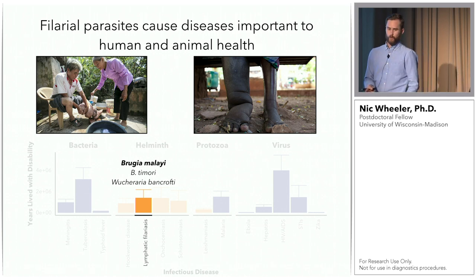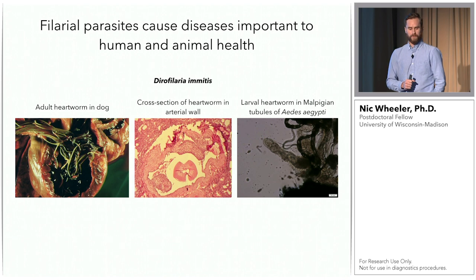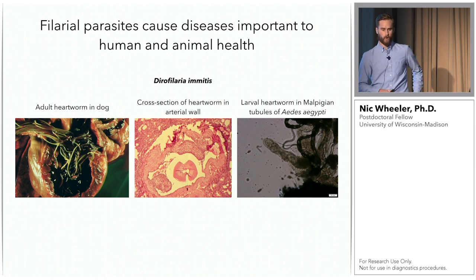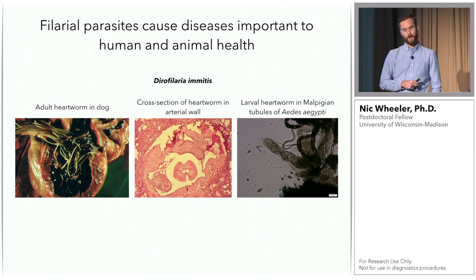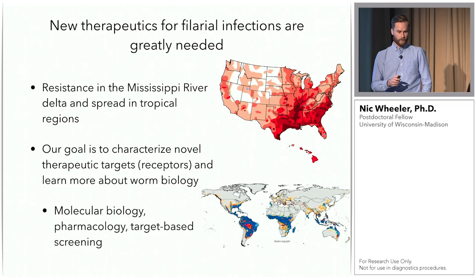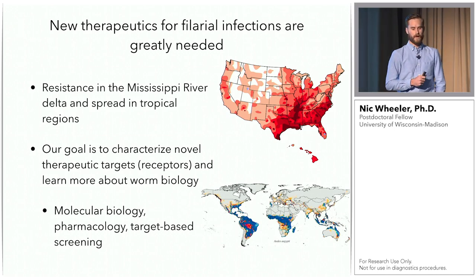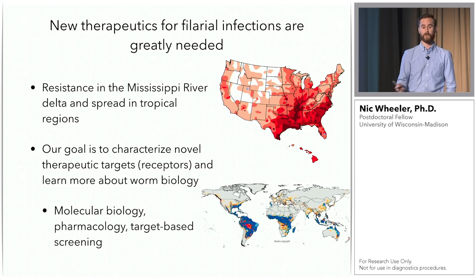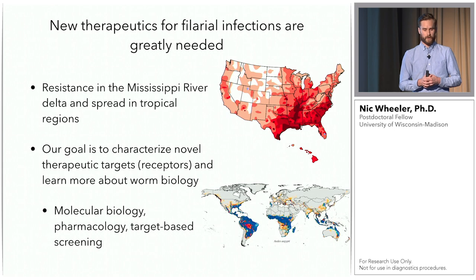The species we study is called Brugia malaii because there is an animal model for it. Relatedly, we have Dirofilaria immitis, more popularly known as heartworm, which infects dogs. Anyone with a dog should be treating them every month with HeartGard or something like it. These parasites are closely related, all transmitted by mosquitoes. A major problem is resistance — for heartworm there's resistance in the Mississippi River Delta and tropical regions, and this resistance is spreading. In endemic countries there is mass drug administration where millions of children are dewormed yearly, but with that much drug pressure, resistance will eventually evolve and spread. There is a great need for new anti-helminthics.